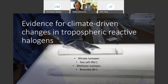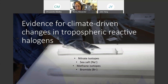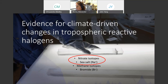What got me interested in reactive halogen chemistry is the evidence for climate-driven changes in tropospheric reactive halogens coming from ice core measurements. Several ice core measurements suggest that tropospheric reactive halogens are higher in cold climates compared to warm climates. I'll talk about two of them: nitrate isotopes, which I've measured in my lab, and sea salt aerosol observations from ice cores.